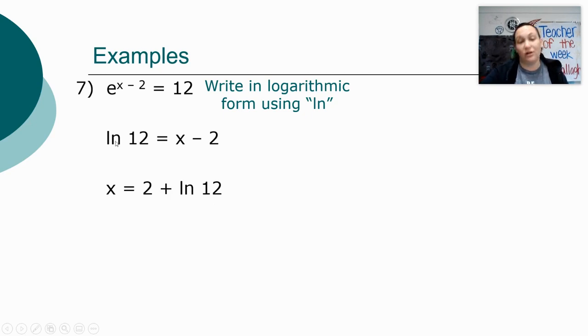The 12 is connected to the natural log, and so we can't actually do any math with the number 12. And so I have found that if I write the plus 2 after the natural log of 12, that I will probably add the 2 and the 12 together and make that a 14, and that would not be correct. So I like to put the plus 2 in front. And then that's it. Now I've solved for x.